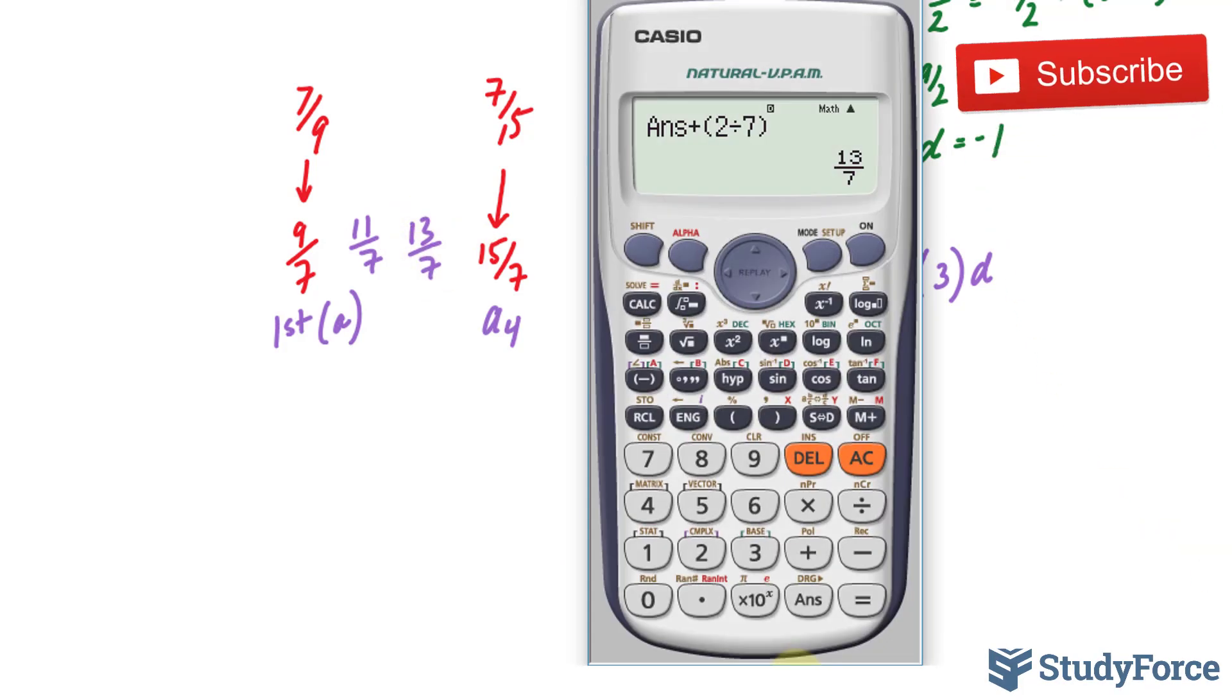And just for good measure, I'll do it one more time and I should end up with 15 over 7. Plus 2 over 7 and I get 15 over 7.